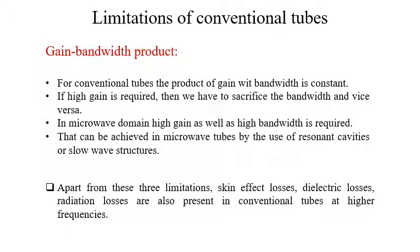The next limitation is the gain-bandwidth product. For conventional tubes, the product of gain with bandwidth is constant — if high gain is required, bandwidth must be sacrificed and vice versa. In the microwave domain, both high gain and high bandwidth are required, which can be achieved in microwave tubes using resonant cavities or slow-wave structures. Apart from these three basic limitations, other limitations like skin effect losses, dielectric losses, and radiation losses are also present at higher frequencies; at lower frequencies these effects are negligible, but at higher frequencies they predominate and the conventional tubes become practically unusable.